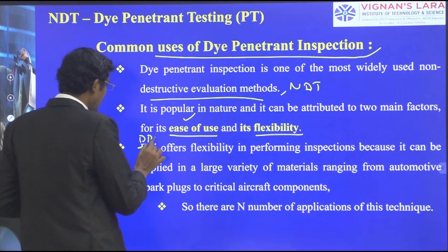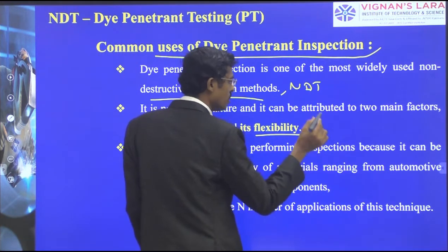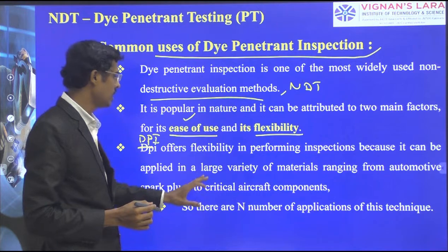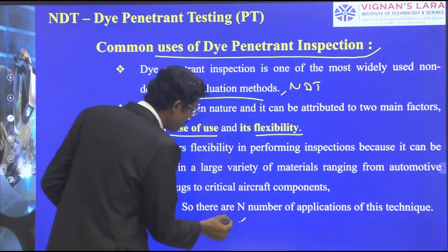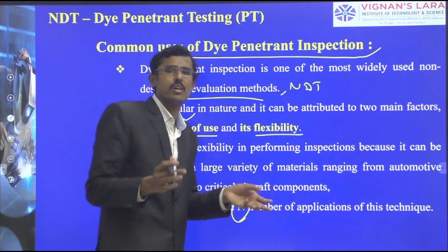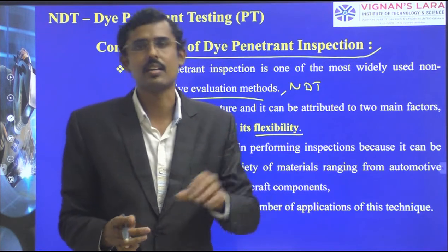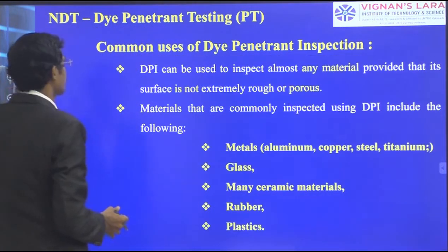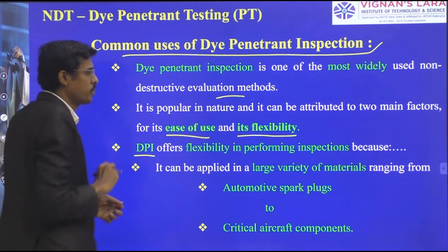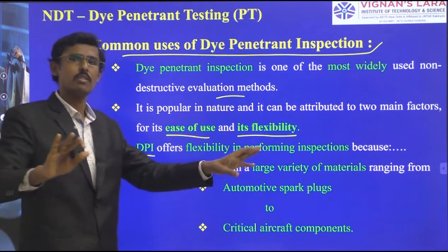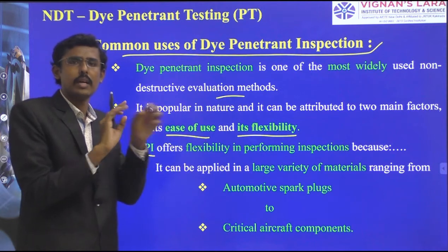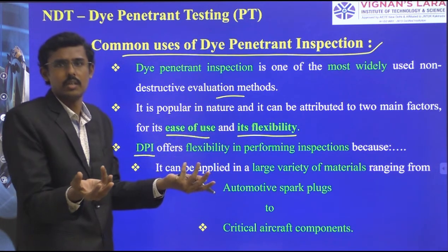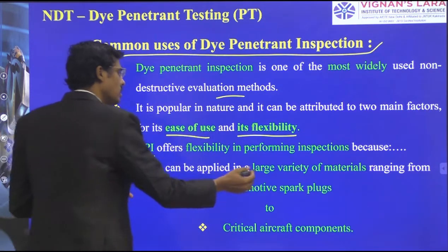Di-penetrant inspection (DPI) offers flexibility because it can be applied to a large variety of materials — ranging from automotive spark plugs to critical aircraft components. There are numerous applications of this technique. Anywhere we are doing preliminary after-service inspections, we try to find a crack. DPI can be applied to any material: conductive or non-conductive, magnetic or non-magnetic. We simply pour red color penetrant and apply white developer — the contrast makes defects visible. So it is independent of the material character.